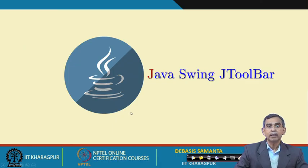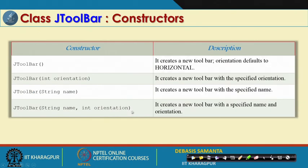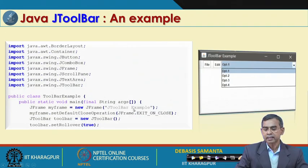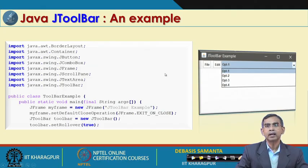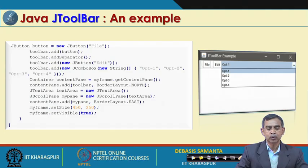JToolBar is very similar to a menu item. It has 2 constructors and many methods. In the example, the toolbar includes File, Edit, Option 1, and many other things under Option 1. It is called a toolbar — similar to a menu bar — and the name 'toolbar' comes from its use in developing tools.